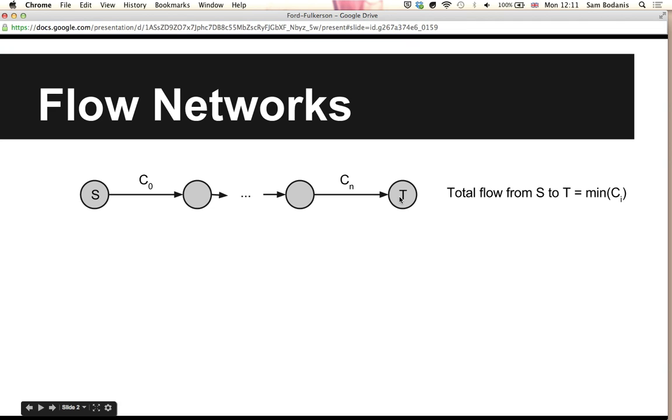So the total flow from S to T, which is the total amount of water you would be able to push through the pipes at any one time, is whatever the minimal capacity of one of the intermediate pipes between S and T is. How this is determined will become more obvious later on.